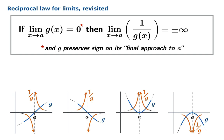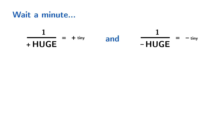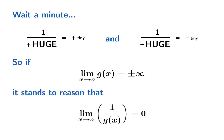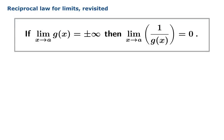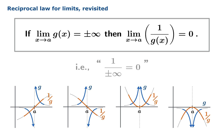Moreover, the mnemonic device we can use to remember it is quite nice. One over zero is positive or negative infinity, depending on how the function goes to zero — either through negative values or positive values. But there's a reciprocal to this law: if you were to reciprocate huge magnitude numbers, you'd get tiny magnitude numbers. This suggests that if the limiting value of a function is either positive or negative infinity, then if you reciprocate that function and look at the limiting behavior, you're going to get zero. And indeed, this is another limit law we can add to the books. The mnemonic device for this is simply: one over positive or negative infinity is zero.